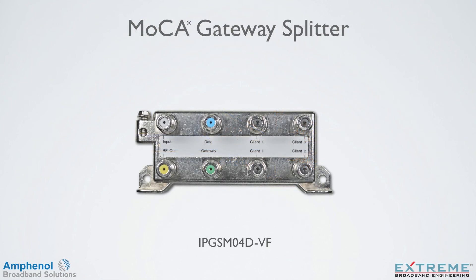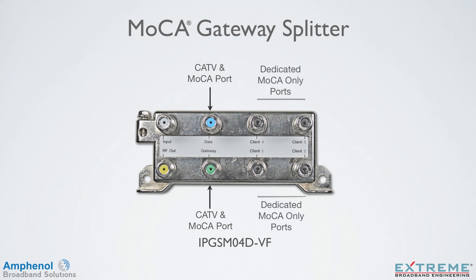The Extreme Broadband MoCA IPGSM04D-VF gateway splitter was designed to take advantage of the MoCA gateway architecture. It has two ports that pass cable TV and MoCA frequencies for data and MoCA gateways, four dedicated MoCA ports that only pass the MoCA frequencies, and MoCA signal between these ports and the data and gateway port with no more than 18 dB of loss. There is also one port that passes cable TV frequencies only, for non-MoCA devices. For more detailed information on the gateway splitter, see our video on the MoCA IPGSM04D-VF gateway splitter on our webpage under the training category.